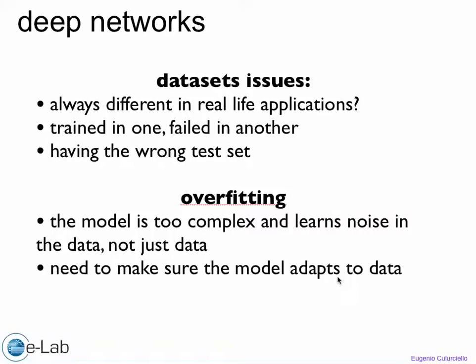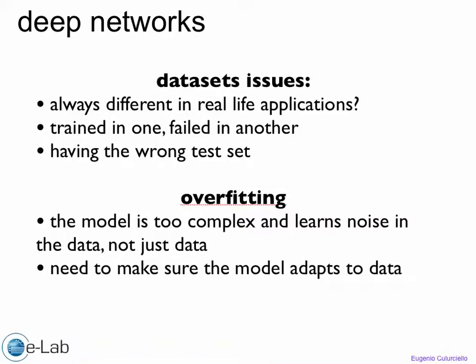You also need to make sure that the model adapts to the data. What does that mean? In the case of images, for example, convolution is a good operation because you keep the data local.